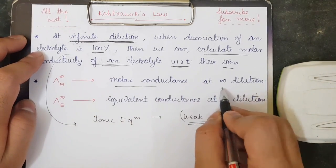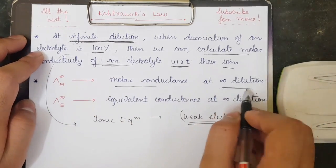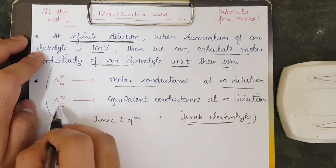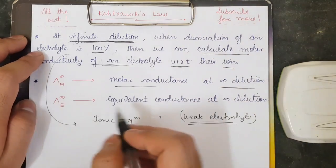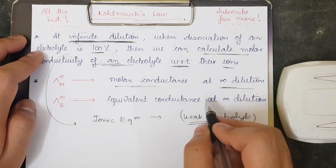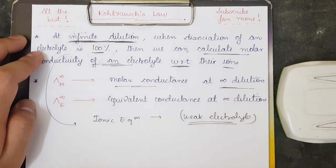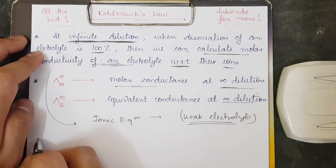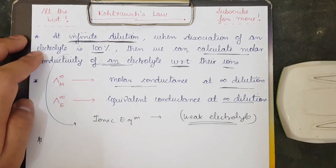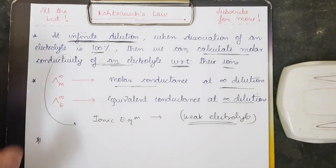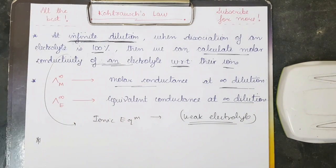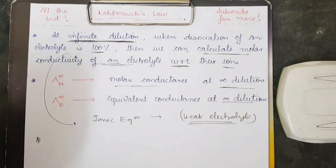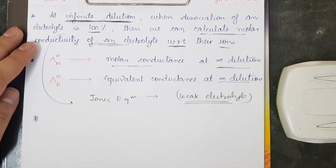Now understand some basic terms: λm∞ is the molar conductance at infinite dilution, and λe∞ is the equivalent conductance at infinite dilution. Let me now tell you the two important points I was talking about — just understand these two points and all questions in this part will be 100% solved.